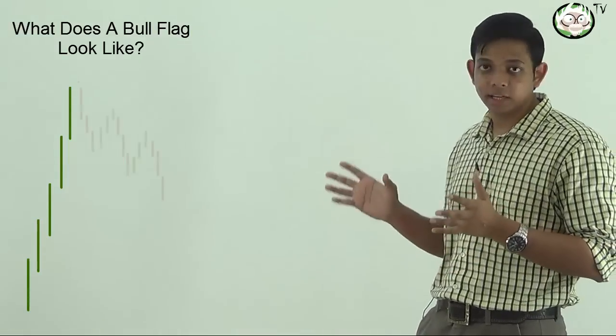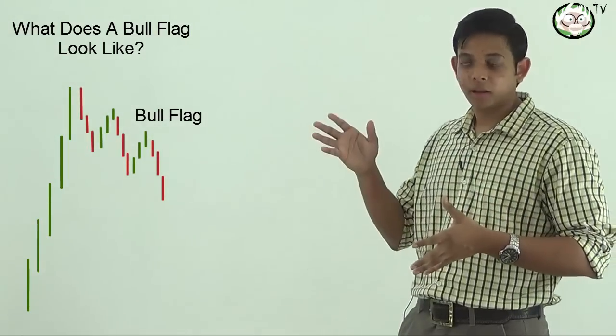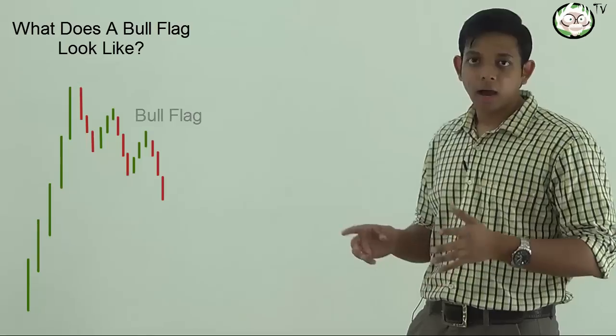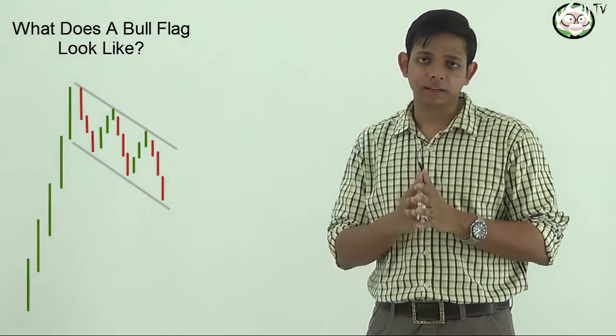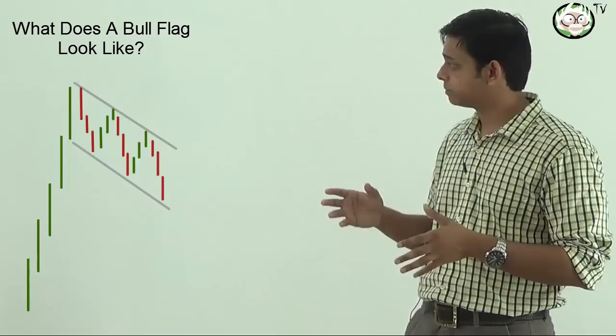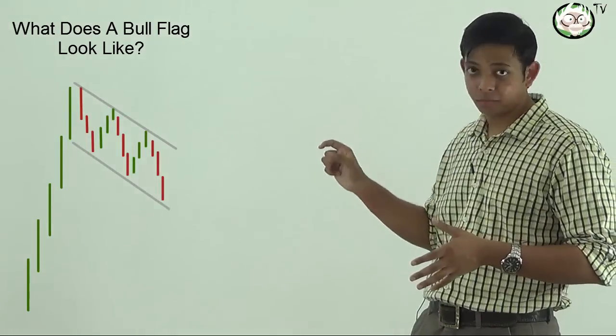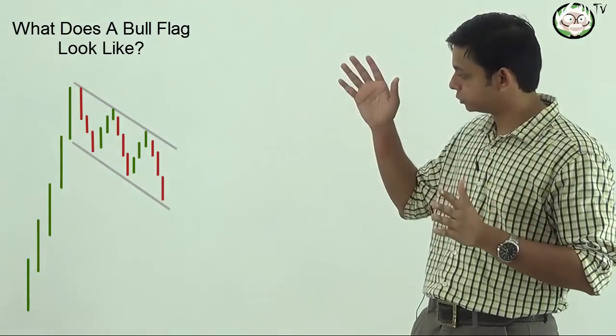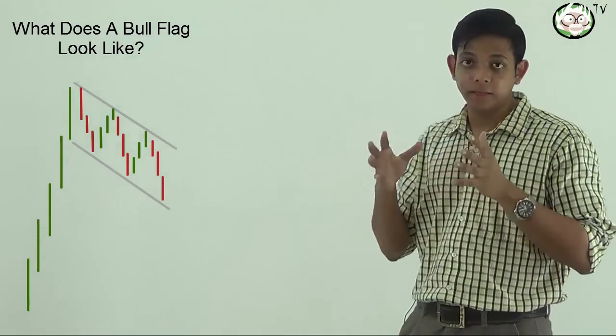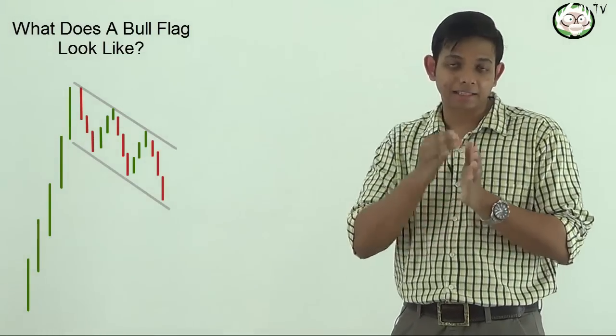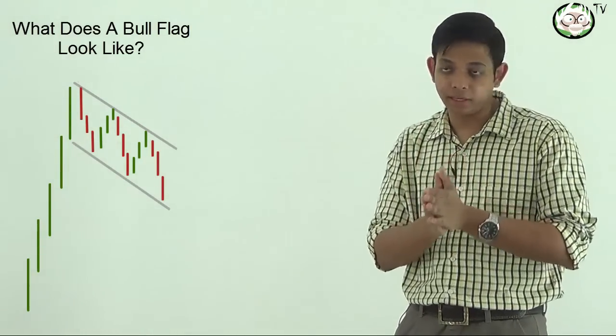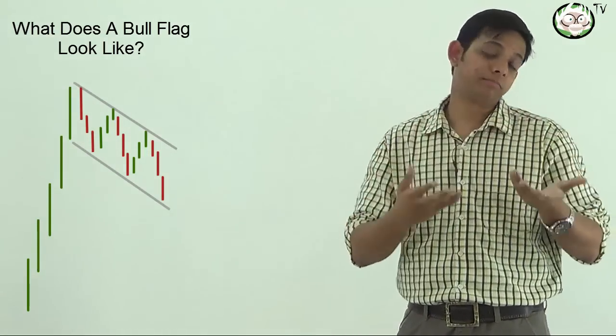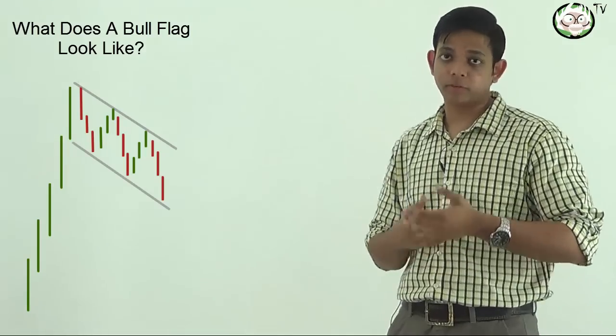Then we get a consolidation or a pause. After a quick run up, we need Usain Bolt to pause and breathe for a while. After a move up, we need a little bit of a pause and that pause comes in the form of a flag, which is a small retracement or a small pause in this up move. And this basically means that the bulls are ready to buy at slightly lower prices because they believe that the previous rally should continue to move up because there is more potential in the stock for whatever reason that they have.